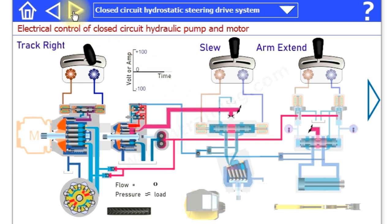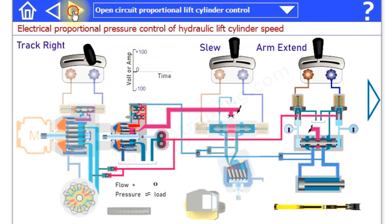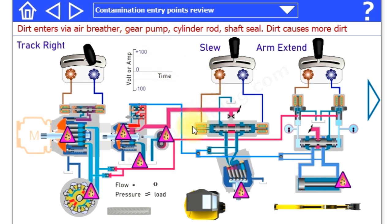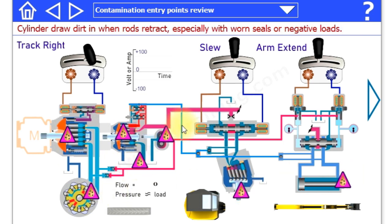You can spend quite a bit of time just operating to see what happens. What we've also got on here are some highlights to show some contamination entry points, the risk areas within the circuit, the areas you'll be looking at for maintenance purposes.